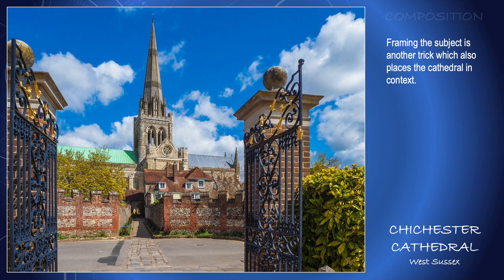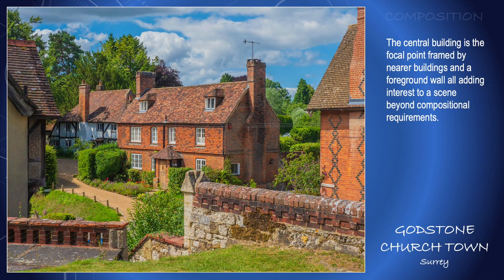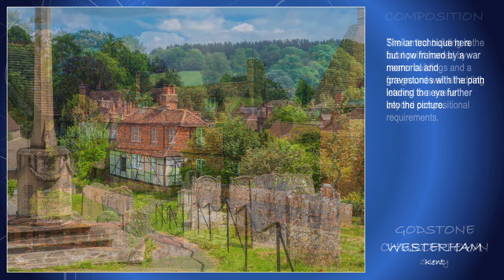Creating the third dimension can also be achieved by framing the image, like here at Chichester Cathedral, where in fact I was trespassing a little bit by standing in the deanery grounds. It can be a little more subtle at Godstown, where the main building in the centre is framed by buildings left and right, and we have the addition of a wall in the foreground which gives the picture depth. A similar situation at Westrum, with the war memorial on the left and the gravestones on the right, but this time the footpath leads the eye down into the picture and the focal point.